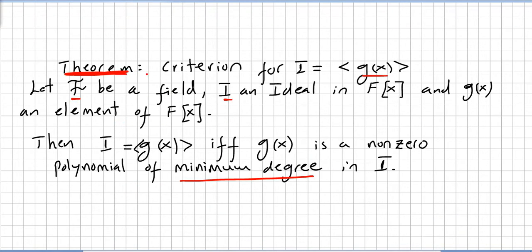Now we go quickly through another theorem — a criterion for an ideal. This is a very handy criterion to know if an ideal can be built with g(x). Let F be a field, I an ideal in F[x], and g(x) an element of F[x]. Then I = ⟨g(x)⟩ if and only if g(x) is a non-zero polynomial of minimum degree in I. It is similar to what we saw in the previous theorem: g(x) has to be the minimum degree polynomial.